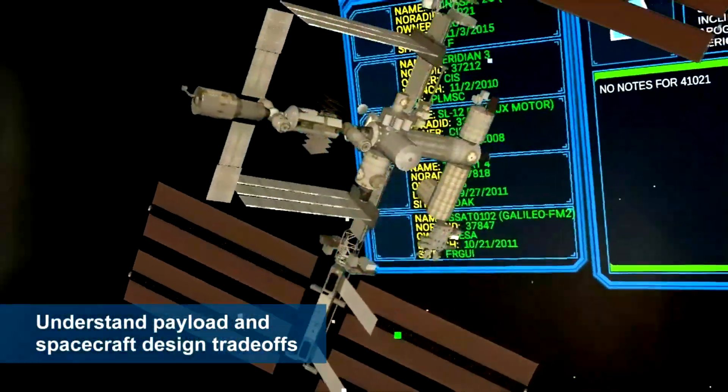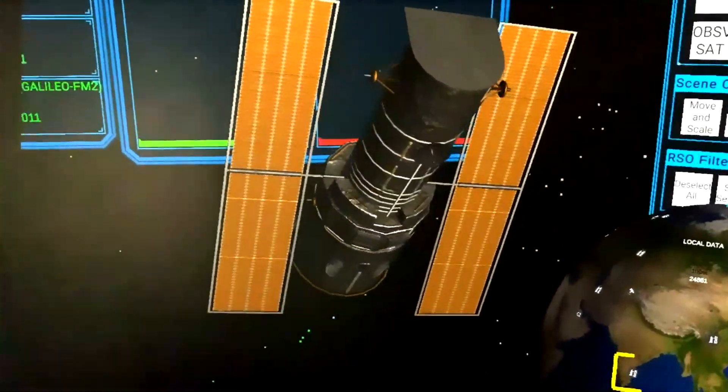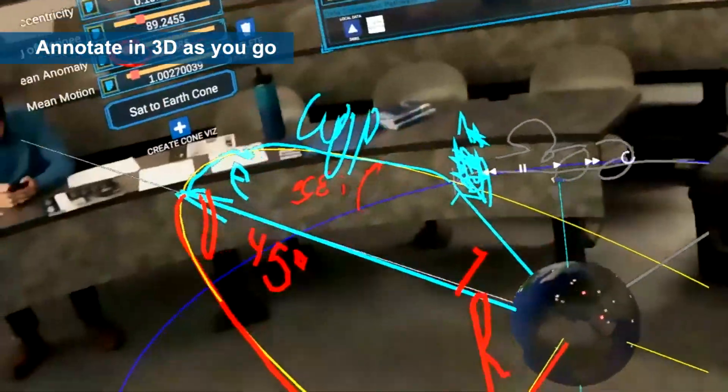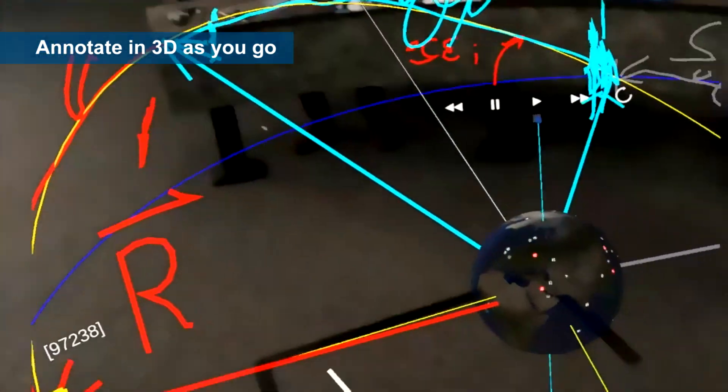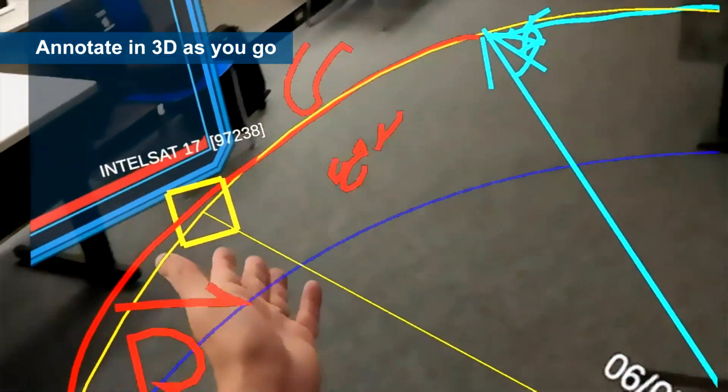Understand payload and spacecraft design trade-offs with satellite 3D CAD models, all while using real-time 3D telestrations to annotate the space picture in scenarios of interest for improved learning and collaboration.